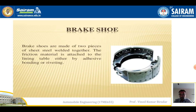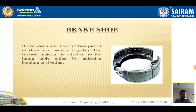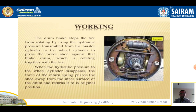The fourth part is the brake shoe. Brake shoes are fitted behind the brake lining. They are made up of two pieces of sheet steel welded together. The friction material is attached to the lining either by adhesive bonding or riveting. The brake shoe is also called a brake pad, and these are fixed upon the brake lining.